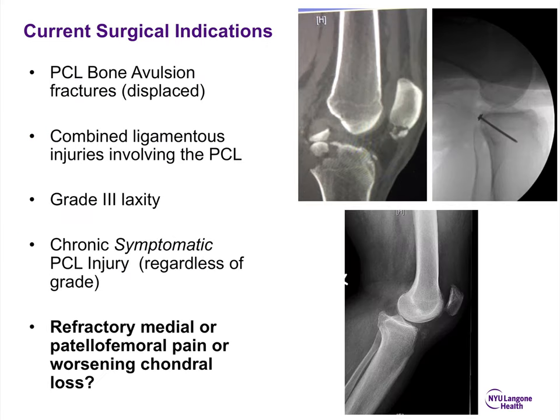Current surgical indications for PCL reconstruction include displaced posterior cruciate ligament bone avulsion fractures, combined ligamentous injuries involving the PCL, and grade 3 laxity. Chronic symptomatic PCL injury regardless of grade is also an indication, as well as refractory medial or patellofemoral pain and worsening chondral loss. PCL-injured knees tend to have increased forces in both the patellofemoral and medial compartments — so remember: medial and patellofemoral contact pressures increase with a posterior cruciate ligament injury.